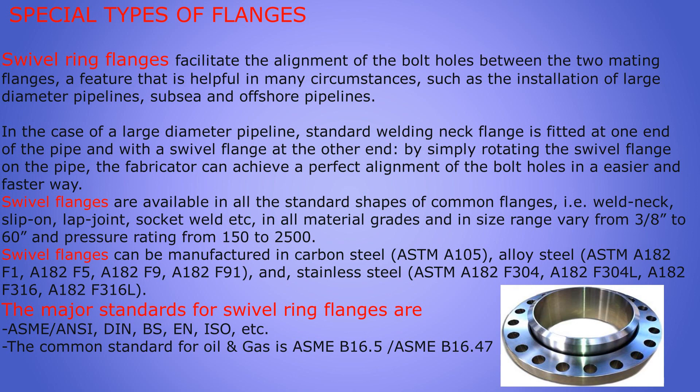Swivel flanges are available in all standard shapes — weld neck, slip-on, lap joint, socket weld, etc. — in all material grades, and in size range from 3/8 inch to 16 inch, with pressure ratings from 150 to 2500. They can be manufactured from carbon steel ASTM A105, alloy steel ASTM A182, and stainless steel. Major standards for swivel ring flanges include ASME B16.5 and B16.47.